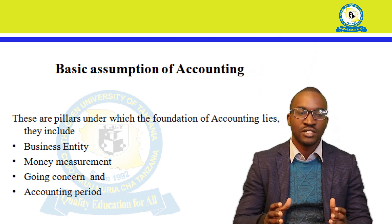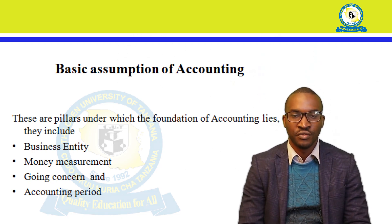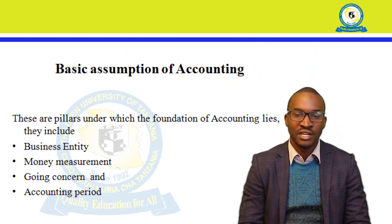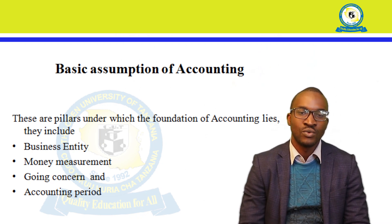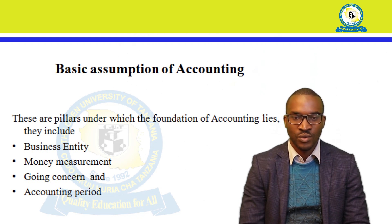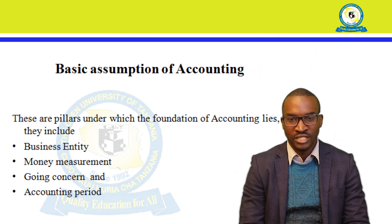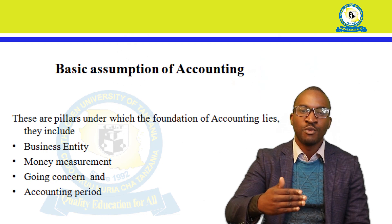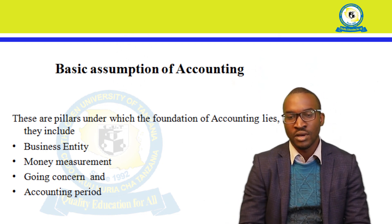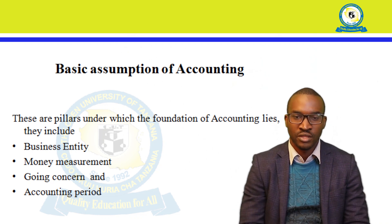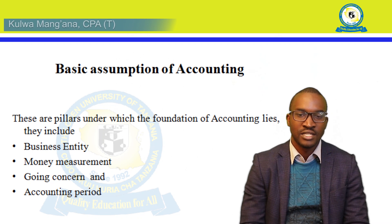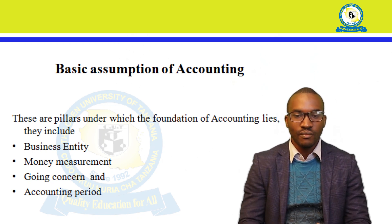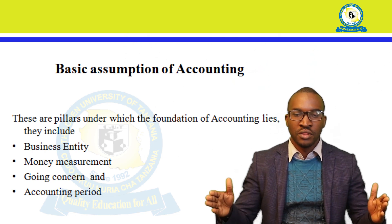Regarding money measurement, transactions accounted in a business are supposed to be recorded in monetary terms — we measure only transactions in monetary terms. The going concern assumption states that we assume the business or company will operate for a foreseeable future time — we expect it to run for more than 12 months. This goes hand in hand with the accounting period assumption, which states that we record transactions within a period of 12 months.